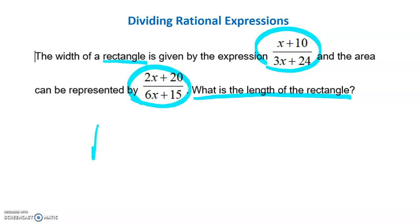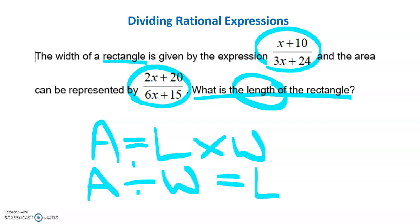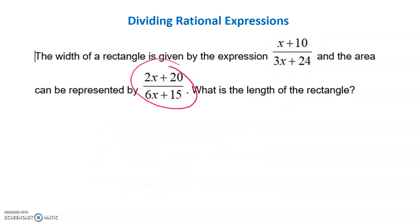We know that the area of a rectangle is length times width, so given that we need the length, we need to use area divided by width in order to get our unknown value. So since this is my area, area divided by width is going to look like this.